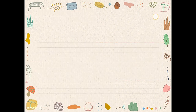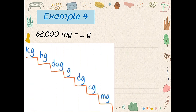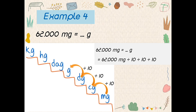Next, example number four: 62,000 milligram, how many gram? From milligram to gram — up or down? Good, up. How many? Three — one, two, three. So, divide by 10, one, two, three. 62,000 milligram divided by 10, divided by 10, divided by 10 — and the answer is 62 gram.